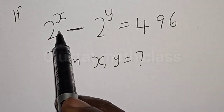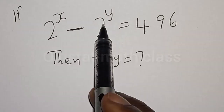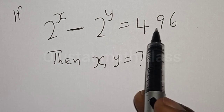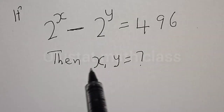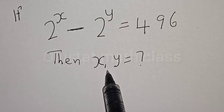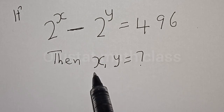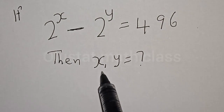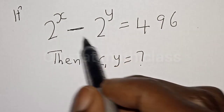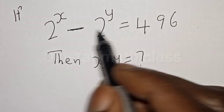If 2 raised to power x minus 2 raised to power y is equal to 496, then what is the value of x and y? Hi everyone, welcome to my class, the Olusta class, where we teach mathematics and statistics. In today's class, we quickly want to find the value of x and y from this given exponential equation.